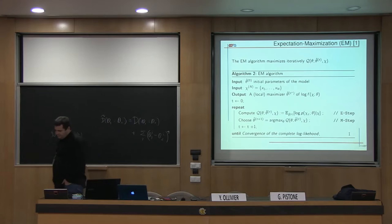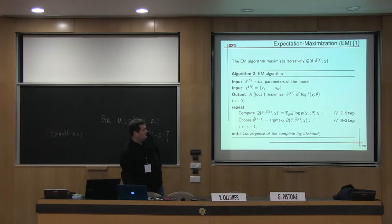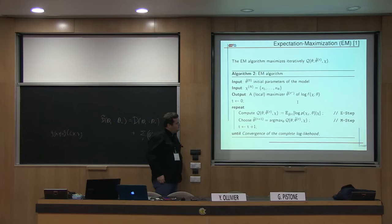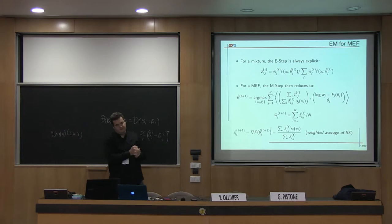So the well-known algorithm is the EM algorithm to estimate this parameter. The EM algorithm maximizes iteratively the quantity called Q, which is defined here. This is the conditional expectation of the log likelihood for complete data given the dataset and the parameterization at iteration T. In the E-step we compute this quantity, and for the M-step we find the maximizer of this quantity. There are very well-known properties of this algorithm; it's a standard tool now in machine learning.